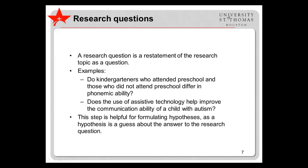A research question is simply a reformulation of the research topic in question form. For example: do kindergarteners who attended preschool and those who did not differ in phonemic ability? Does the use of assistive technology help improve the communication ability of a child with autism? This can be very helpful for formulating hypotheses, as a hypothesis is a direct answer, based on an educated guess, to the research question.